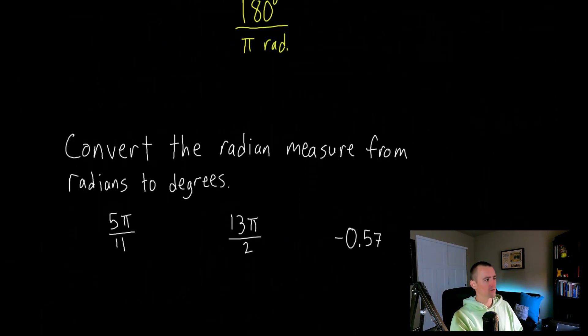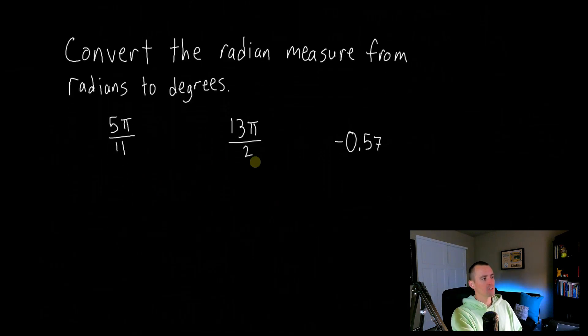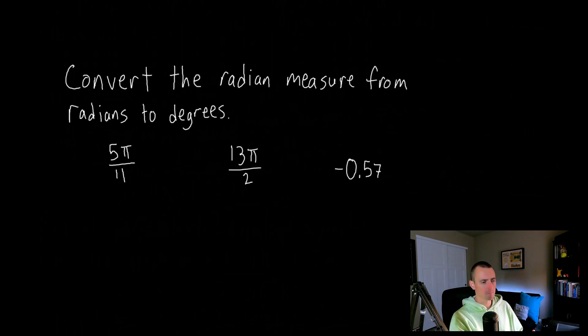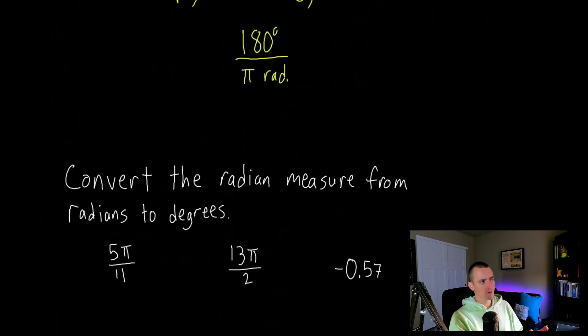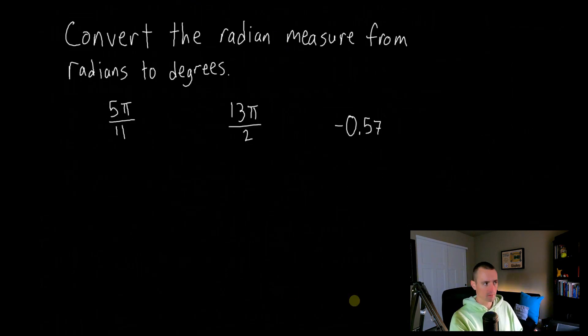Well, let's go ahead and do a couple of examples here. So let's say we want to convert these three radian measures from radians to degrees. So like I said, all we have to do is multiply each of them by 180 degrees over pi radians.